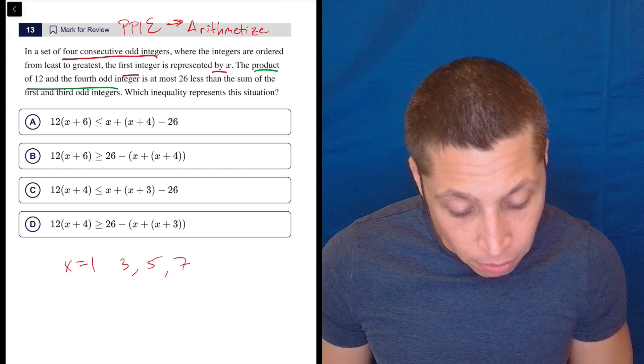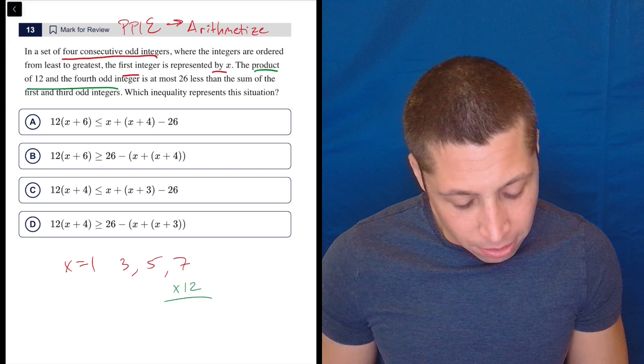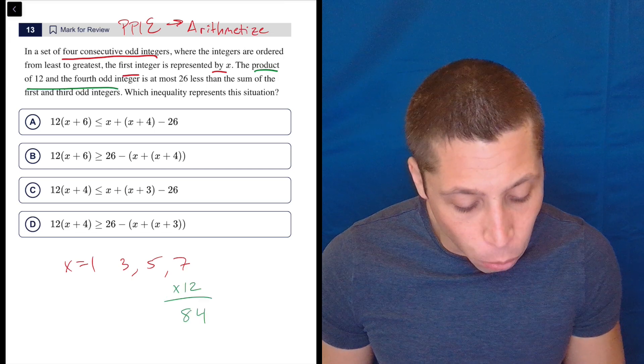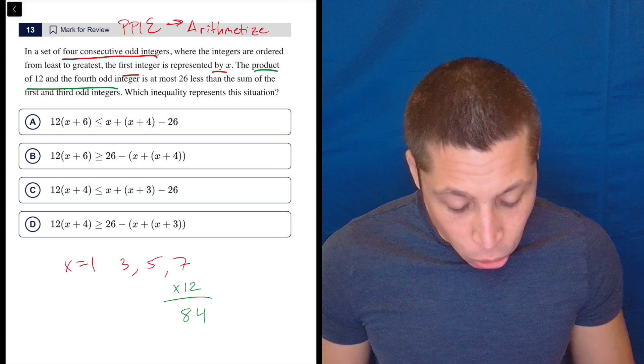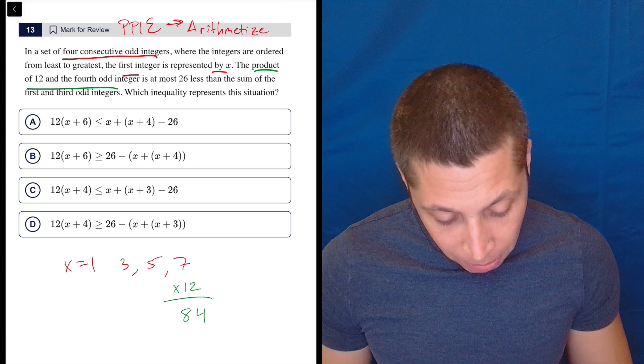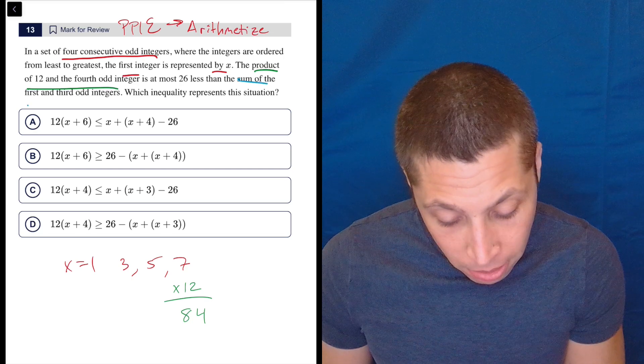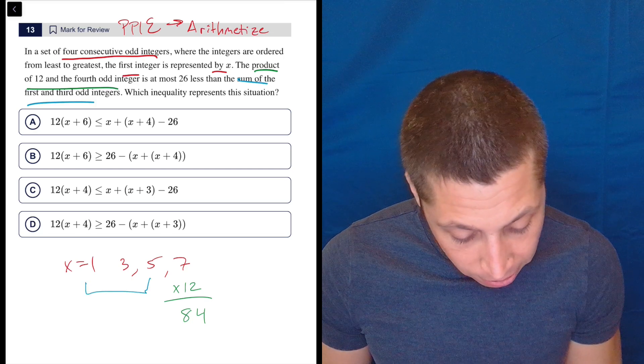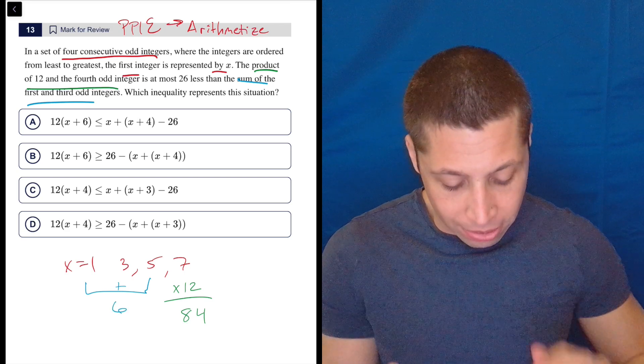The product of 12 and the fourth odd integer. So seven times 12, that's 70 and 14. So that's 84. Okay. Is at most 26 less than, oh my gosh, the sum of the first and third. So I can at least do this part, the sum of the first and third, that's the sum of one and five, which is six. Okay. So I got two numbers here.